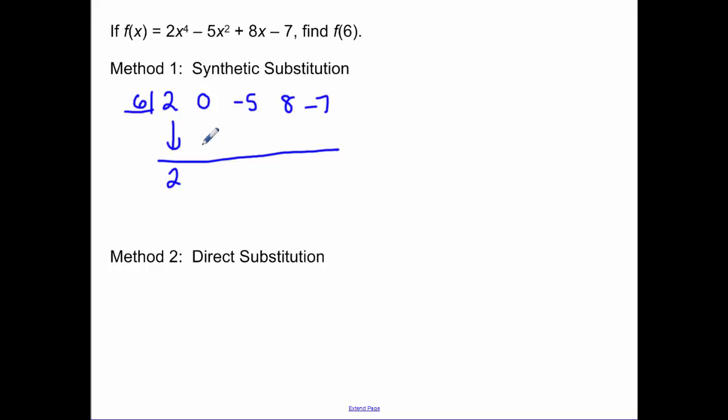So I bring down the 2. 2 times 6 is 12, I add. 12 times 6 is 72. I add those to get 67. Then I multiply 67 times 6 to get 402. Because then when I add I get 410.